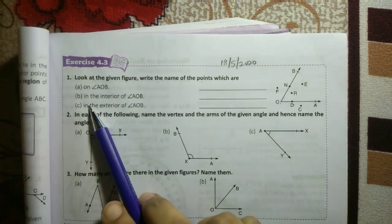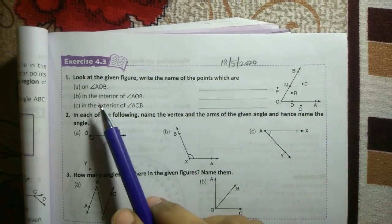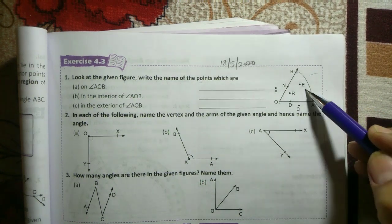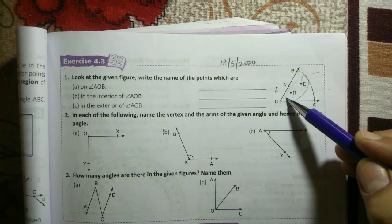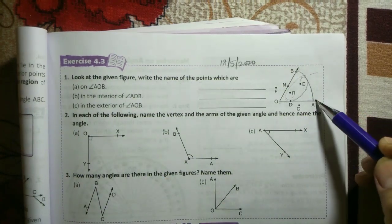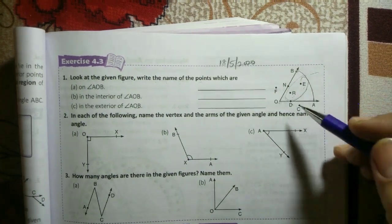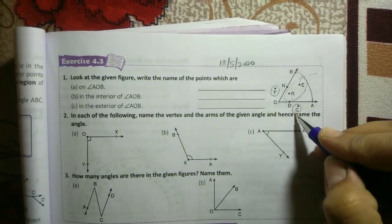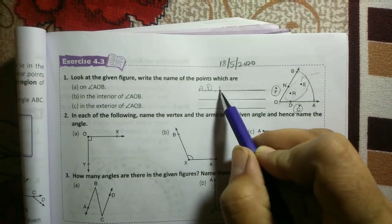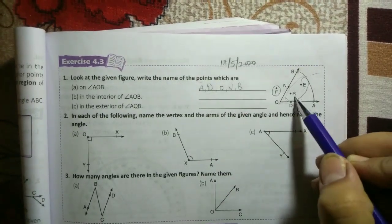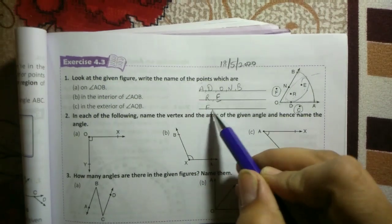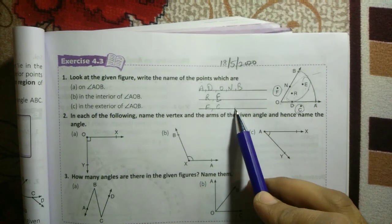Second is in the interior of angle AOB. The interior part will be below it, so which points are E. In the exterior, point which will be this angle above it, will be exterior points F and C. So you can write here: lies on ADONB, interior are E, exterior are F and C.